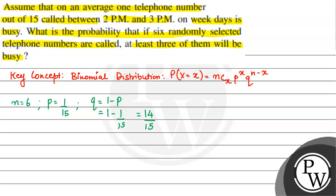I need at least 3 of them to be busy, meaning probability of x should be greater than or equal to 3. So I can find this as 1 minus probability of x equals 0 plus probability of x equals 1 plus probability of x equals 2.